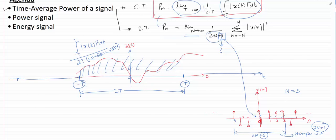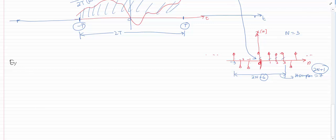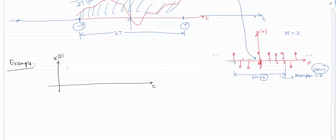Now let's try out some examples. For the first example I have a signal which gives you 0 when t is negative, and 1 when t is positive. For those who are interested, we call this kind of signal a unit step. We will talk more about it in future videos, but for now let's just try to find the power of this signal.